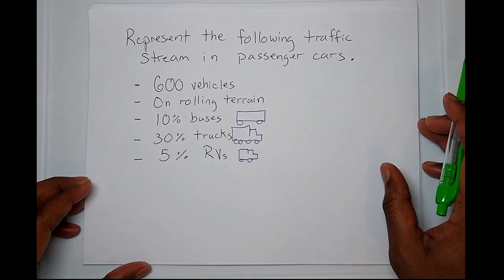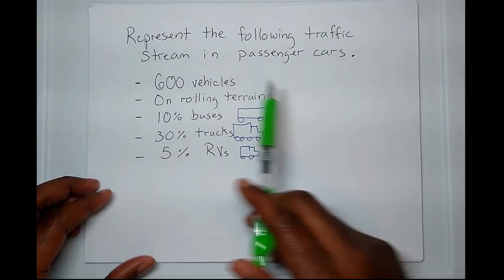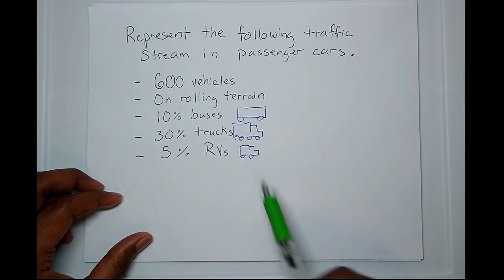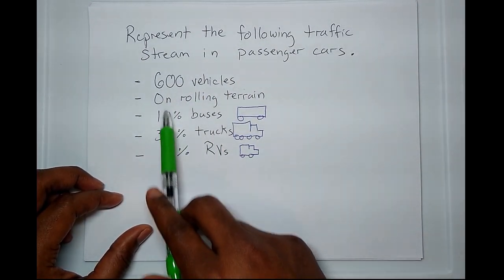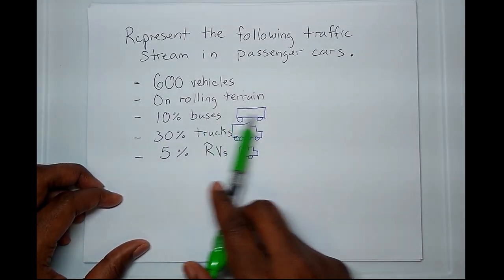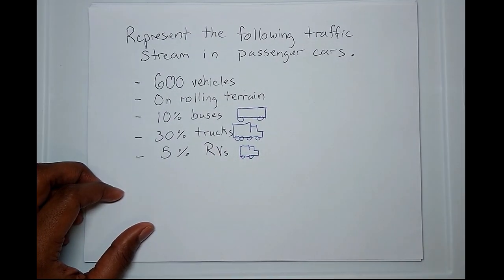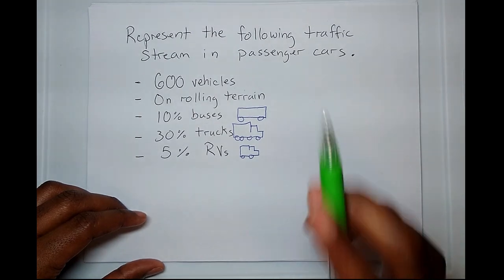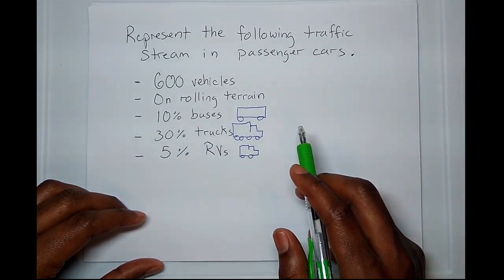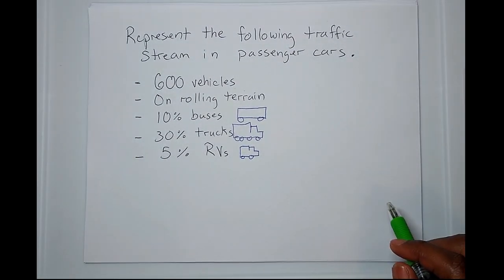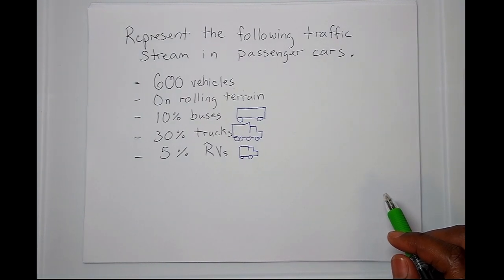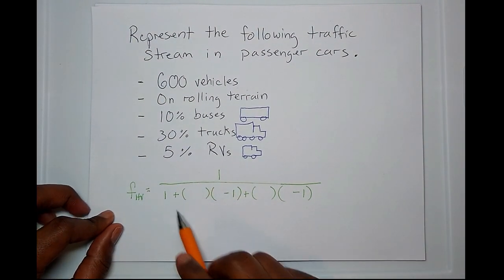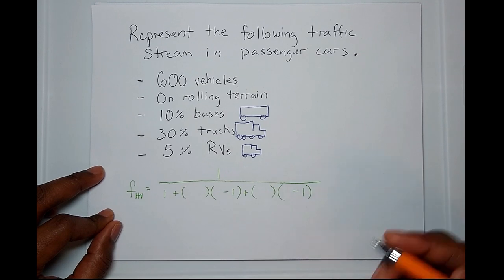Let's approach this example problem that wants us to represent this traffic stream in passenger cars. It's 600 vehicles total. Of those 600 vehicles, 10% are buses, 30% are trucks, and 5% are RVs. We want to condense all of that into one type of unit — passenger cars. The first thing we need is the heavy vehicle factor equation, so let me write that down.